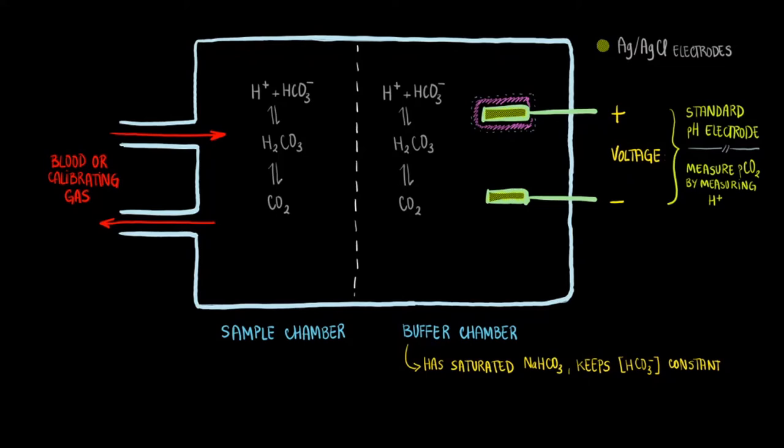As you may recall, in the pH electrode, we have a hydrogen ion-sensitive electrode surrounded by an environment with saturated HCl, or hydrochloric acid, kept together by a semi-permeable glass membrane. For more details on the pH electrode, please check out our video on the topic in our channel.